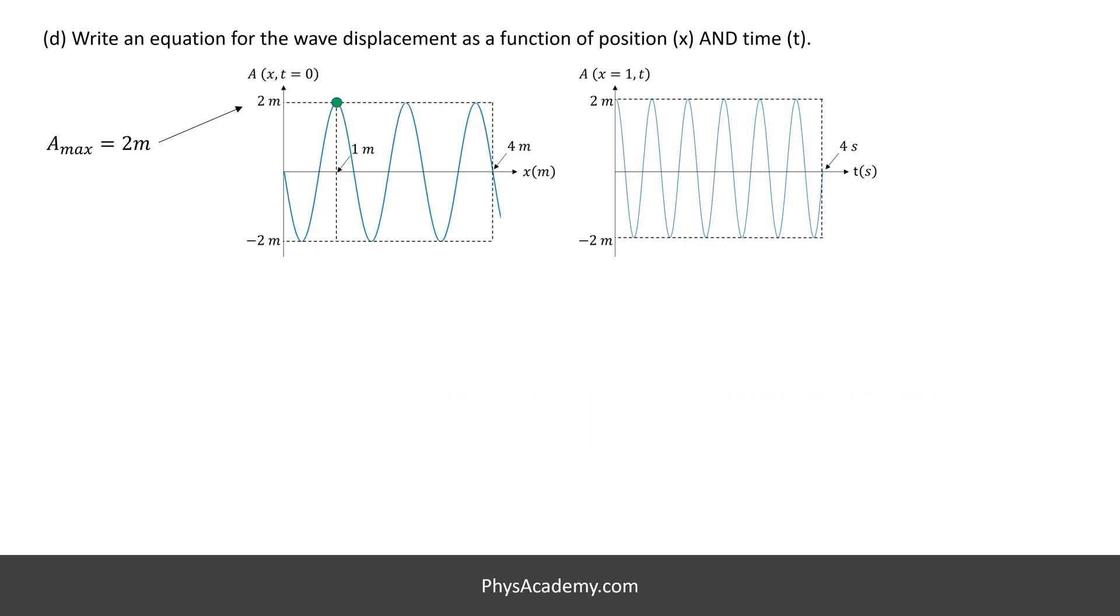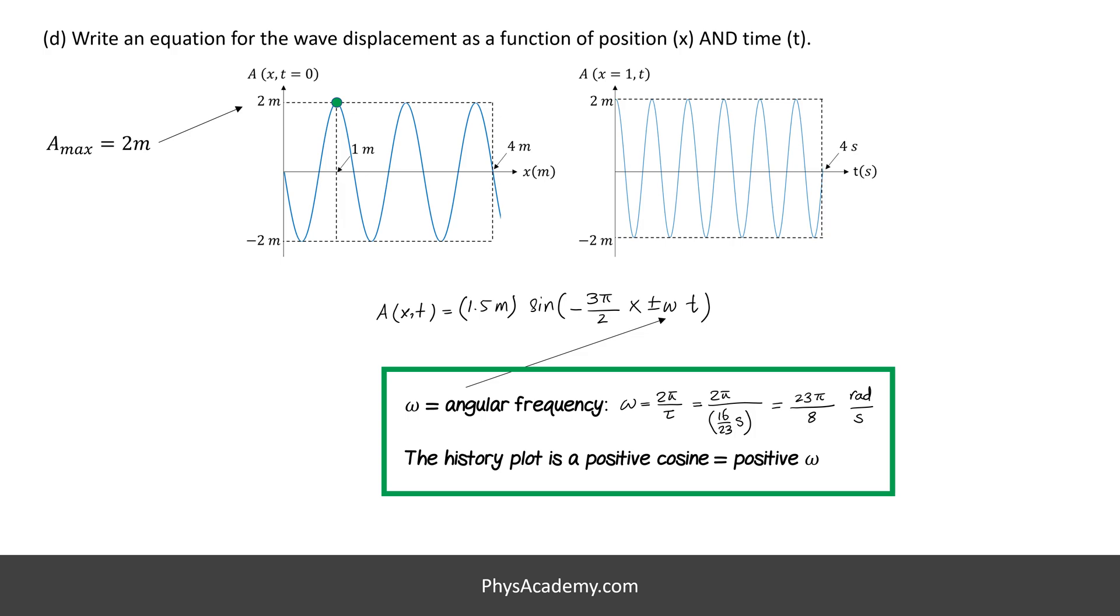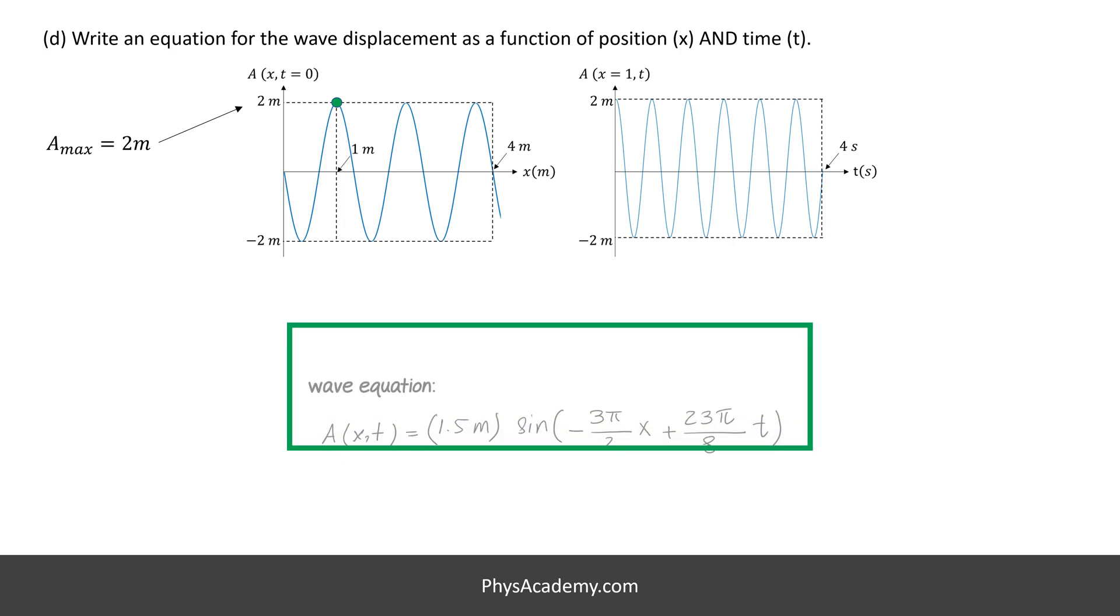Let's plug in the numerical values so far we have. Alright, we can calculate the omega or angular frequency by dividing 2 pi by the period from part A. The angular frequency is 23 pi divided by 8 radians per second. After plugging in the numerical value of angular frequency, we have the final wave equation of our wave.